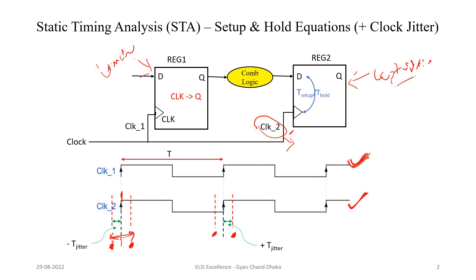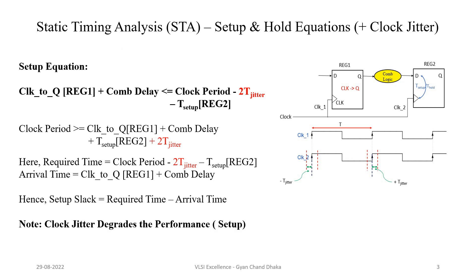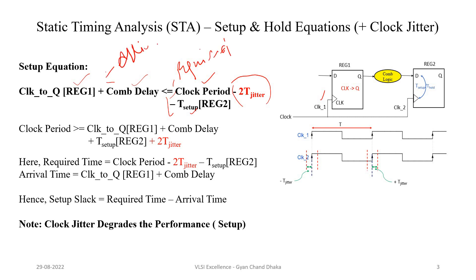Now let us see how clock jitter affects the setup and hold timing equation. First we will consider there is no clock jitter and the clock is ideal — clock one and clock two are exactly the same, with no difference. In that case, if you remove the minus T_jitter term, these are the equations we studied two or three chapters back: propagation delay (clock-to-Q delay plus combinational logic delay) should be less than clock period minus T_setup. This is the required time, and this is the actual arrival time of data from the launch flip-flop to the capture flip-flop data pin.